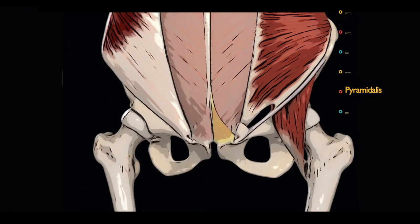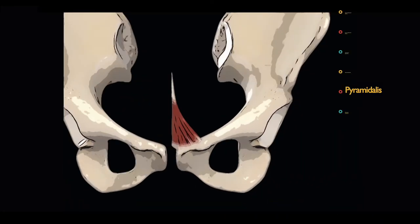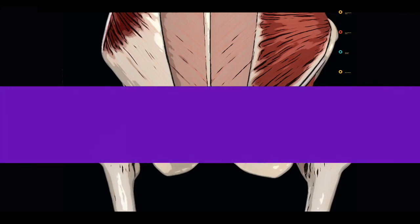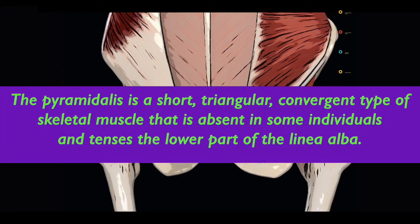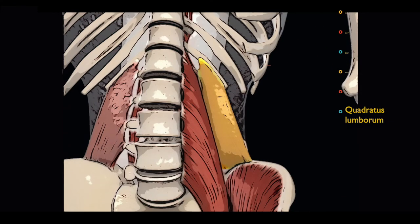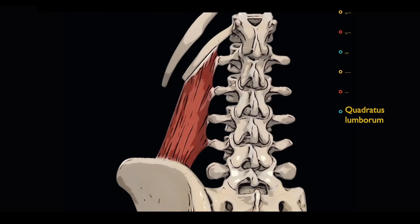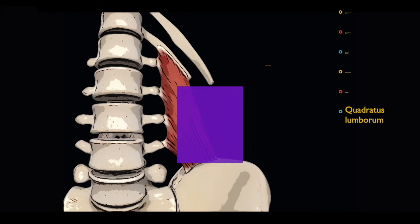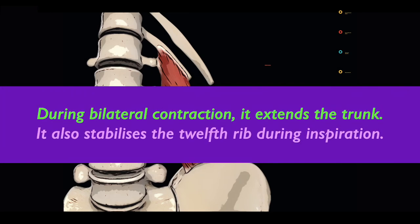The pyramidalis is a small muscle at the bottom anterior aspect of the abdominal wall, originating from the superior aspect of the body of the pubis and the anterior pubic ligament. Its fibers travel superomedially and insert onto the linea alba between the pubic symphysis and umbilicus. It is a short triangular convergent skeletal muscle, absent in some individuals, that tenses the lower part of the linea alba. Finally, the quadratus lumborum originates from the posterior half of the iliac crest and the iliolumbar ligament, inserting onto the inferior border of the 12th rib and transverse processes of L1–L4. During unilateral contraction it laterally flexes the trunk to the same side; during bilateral contraction it extends the trunk, and it stabilizes the 12th rib during inspiration.